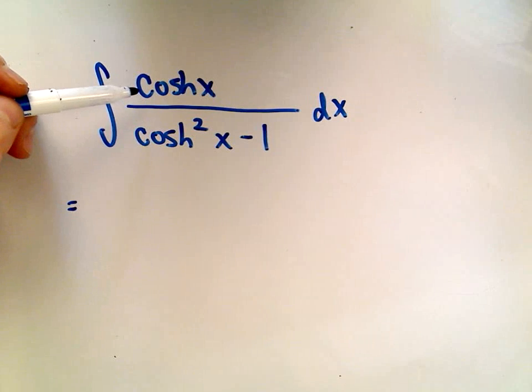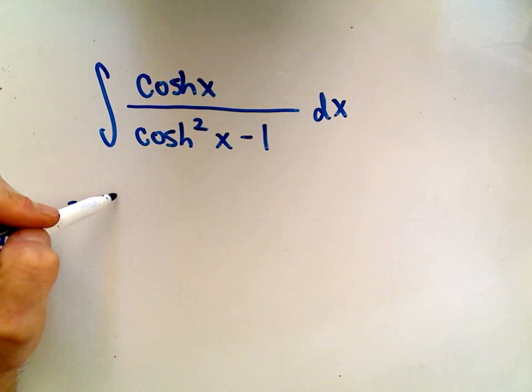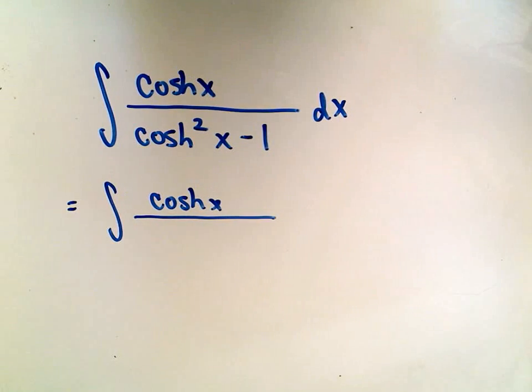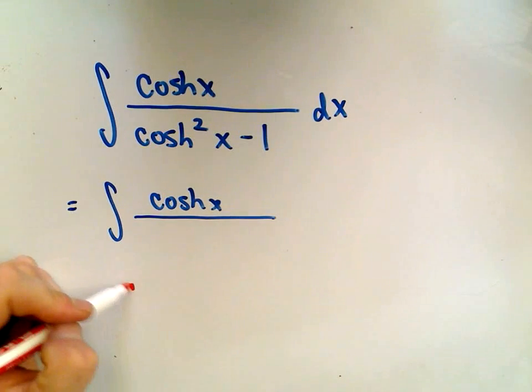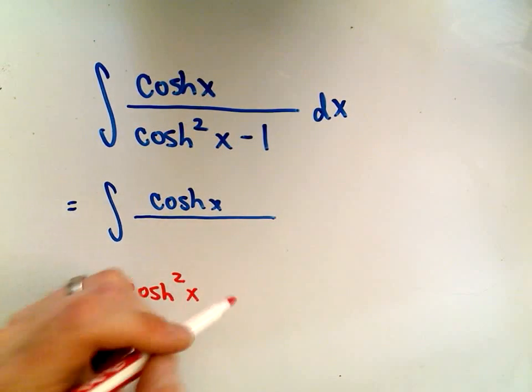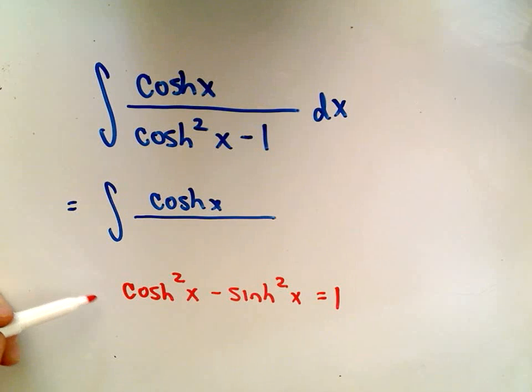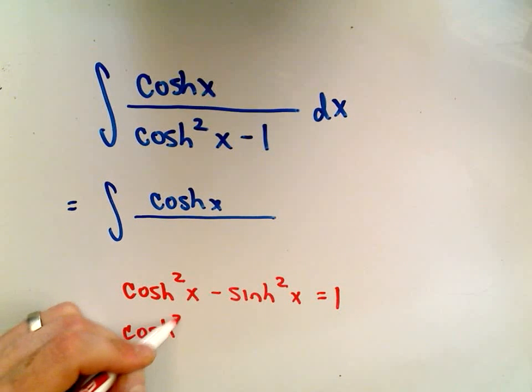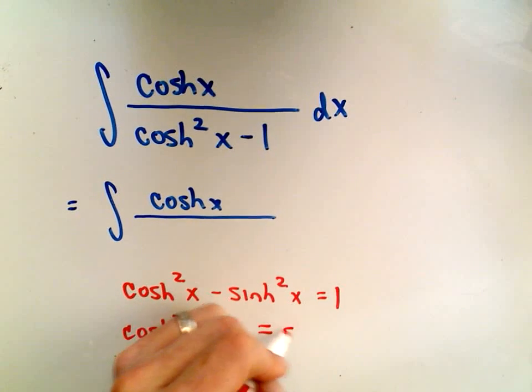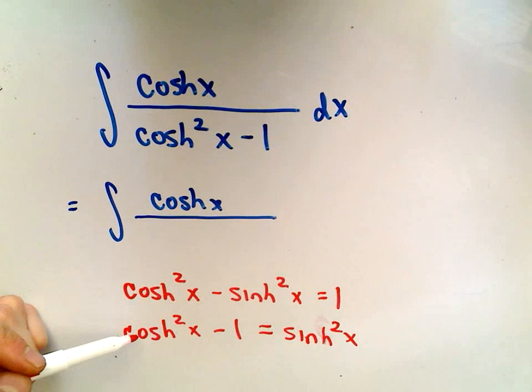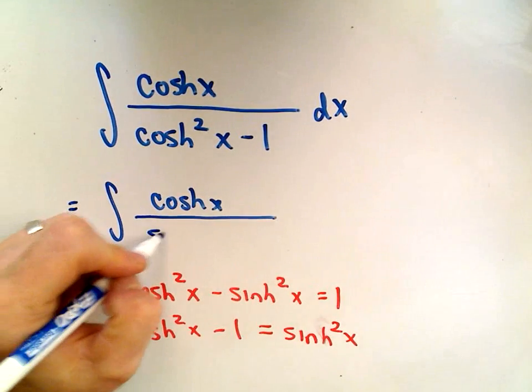Here we want to integrate hyperbolic cosine over hyperbolic cosine squared x minus 1. There's a trig identity that says hyperbolic cosine squared x minus hyperbolic sine squared x equals 1. This is the fundamental identity. If you subtract 1 and add hyperbolic sine, we get that hyperbolic cosine squared minus 1 is hyperbolic sine squared. So that's what I'm going to plug in the bottom, and I'm just going to plug that in.